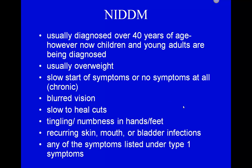For non-insulin-dependent diabetes mellitus, most patients have typically been diagnosed over 40 years of age, though younger adolescents and children are now being diagnosed. These people are usually overweight, and poor nutritional and lifestyle habits — like lack of exercise — lead to this condition. They have a more chronic or slow onset of symptoms. The symptoms are pretty much the same: polyuria, polydipsia, and excessive hunger.